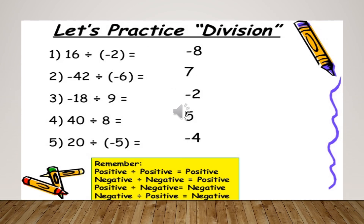Now let's practice division. 16 divided by minus 2 gives minus 8, because one number is positive and the other is negative. Minus 42 divided by minus 6 — both have the same sign, so the answer is positive 7. Minus 18 divided by 9 — one positive, one negative — gives minus 2. 40 divided by 8 gives positive 5, since both numbers are positive. 20 divided by minus 5 — one positive, one negative — gives a negative answer.